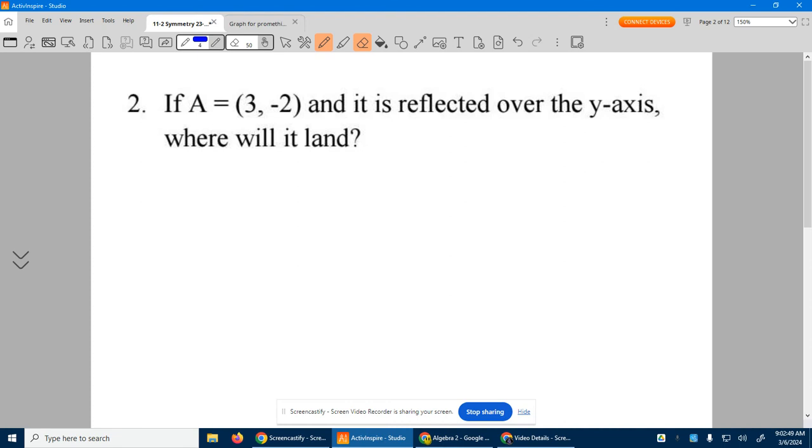Number two: If A is at the point (3, -2) and it's reflected over the y-axis, where will it land? Now I will go to a graph and do this one, but I want us to be able to view it without a graph because you're not going to have one.